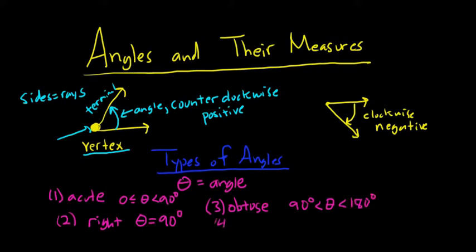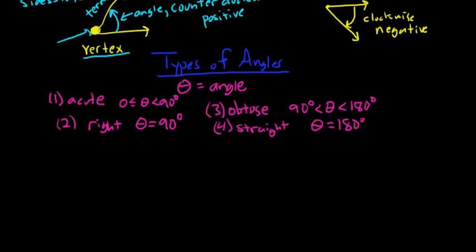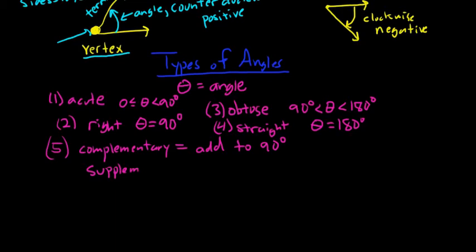A straight angle. So lots of terminology. A straight angle is a 180 degree angle. And then we have two other important ones. We have what's called complementary and supplementary. Complementary means that they add to 90 degrees. So two angles are complementary if they add to 90 degrees. And then we have supplementary. This means they add to 180 degrees.